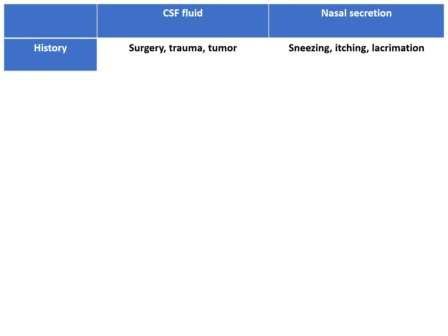First, we need to take a proper history of the patient. If there is any history of surgery — nasal or sinus surgery — or any history of trauma, head injury, or if the patient has a nasal tumor, then there are chances of CSF leak or CSF rhinorrhea. While if the history is suggestive of symptoms like recurrent paroxysmal sneezing, itching in the nasal area, itching in the eyes, and lacrimation, then these are suggestive of allergic rhinitis or vasomotor rhinitis. So by history, we can get an idea regarding the nature of the disease.